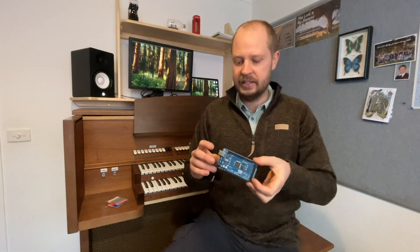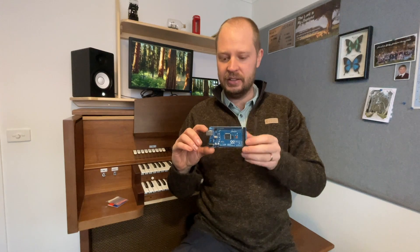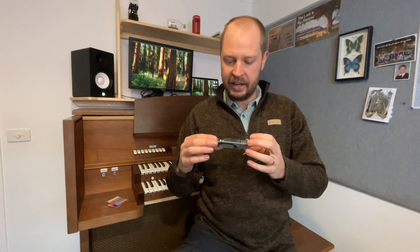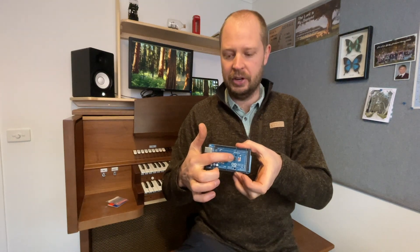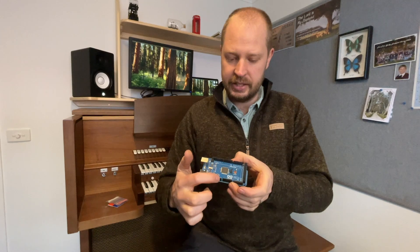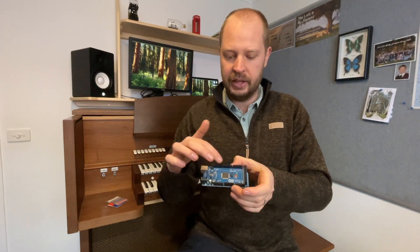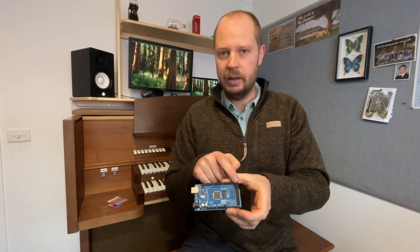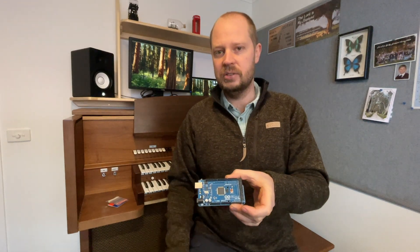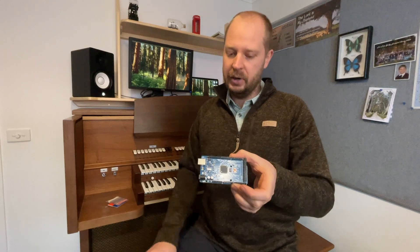And just for context, this is an example of a microcontroller. This is an Arduino Mega. So, there you've got the CPU in the middle. That's what does all the work. This is a USB, which powers it. And then each of these little pins are all the inputs or outputs. So, most of them are digital inputs. And these are the ones we need to use to interface the keyboard with the microcontroller.